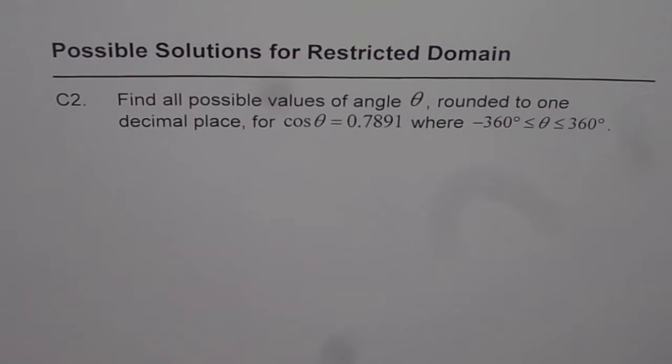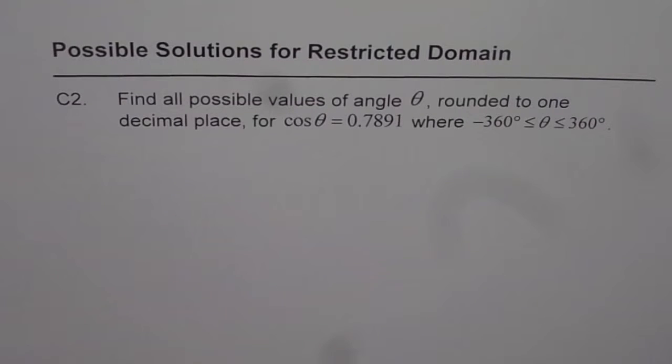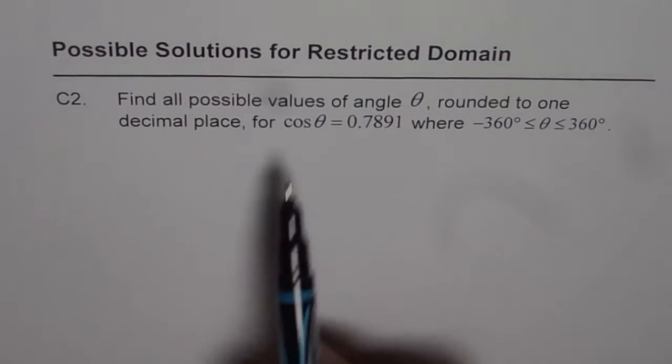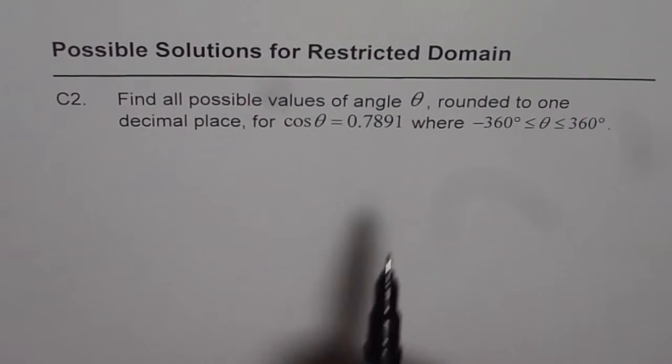Possible solutions for restricted domain C2. Find all possible values of angle theta rounded to one decimal place for cos theta equals 0.7891 where theta is greater than or equal to minus 360 and less than or equal to 360 degrees. I am Adil Kumar and in this video let us see how to calculate values of theta when the domain is restricted.